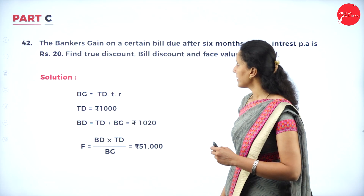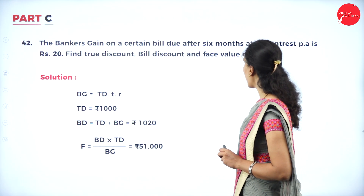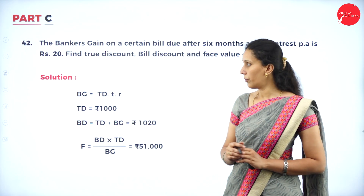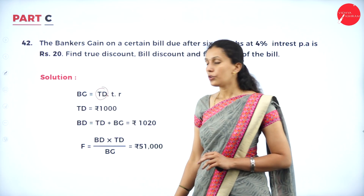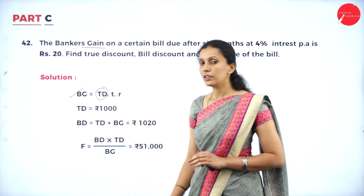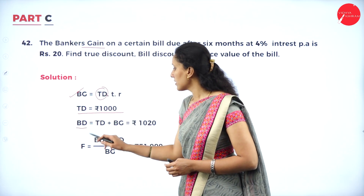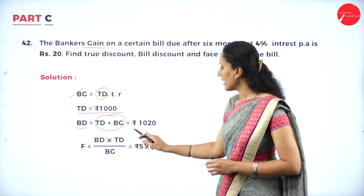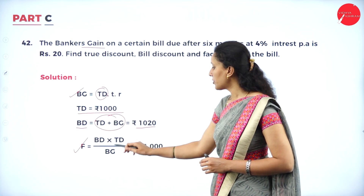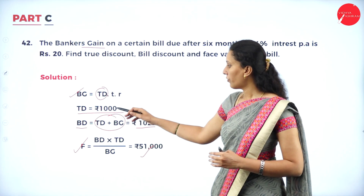The banker's gain on a bill due after 6 months at 4% per annum is ₹20. Find the true discount, bill discount, and face value. Using the formula with banker's gain, time, and rate of interest, the true discount = ₹1,000. Banker's discount = true discount + banker's gain = ₹1,000 + ₹20 = ₹1,020. Using the face value formula and substituting values, face value = ₹51,000. Three marks are awarded for finding true discount, bill discount, and face value.